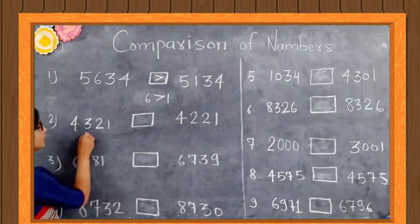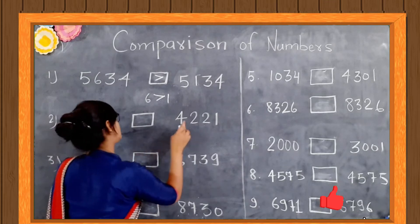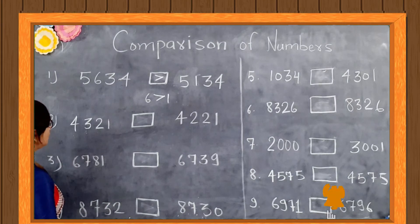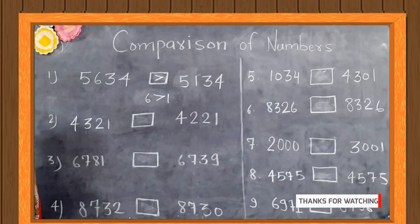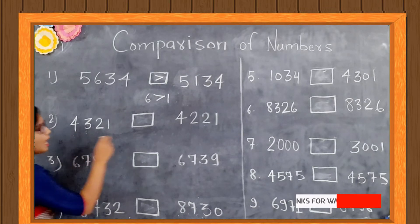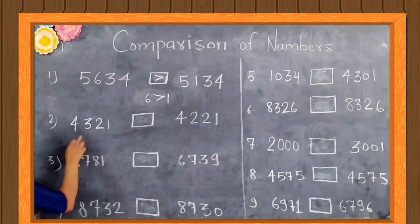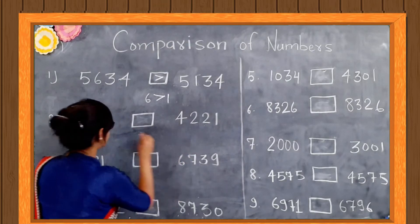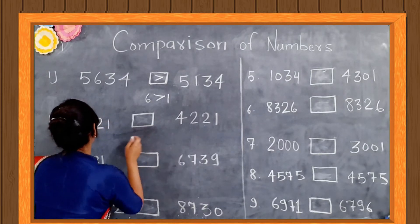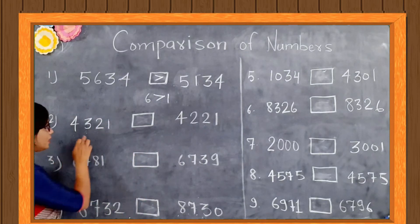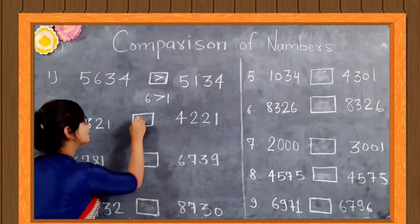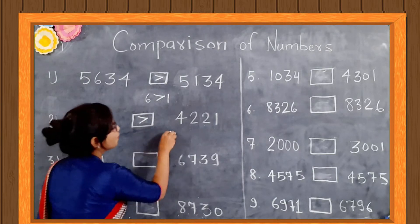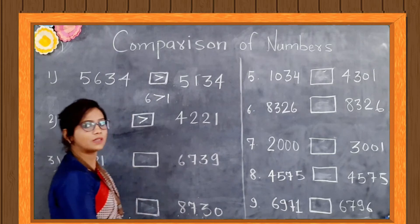4,321 and 4,221. In the 1000 place, the digit is 4 and 4, so we compare by the 100 place. The digit at the 100 place is 3 and 2. So 3 is bigger than 2. Therefore 4,321 is bigger than 4,221.